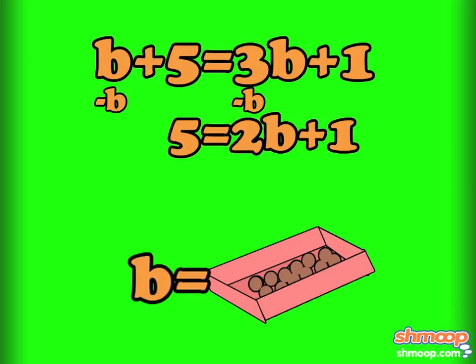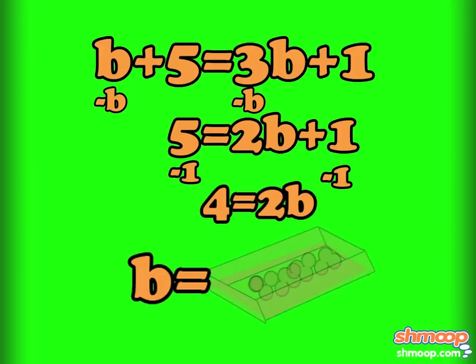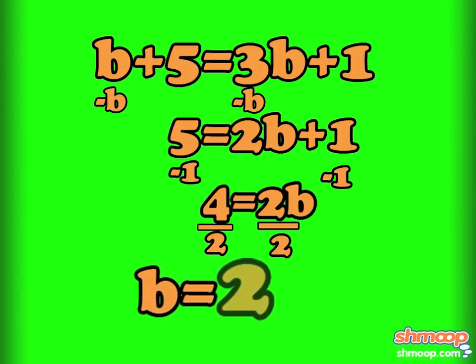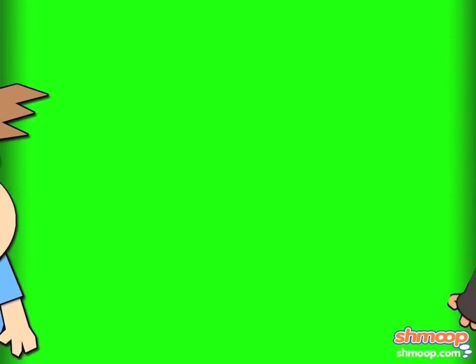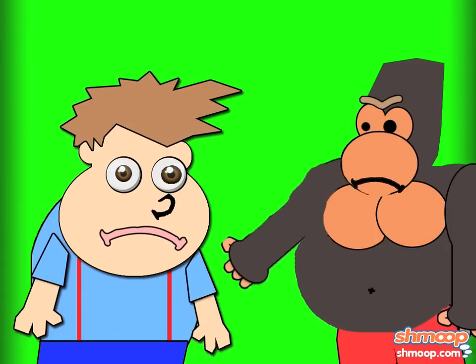Next, we can do the same thing with the remaining individual chocolates. Subtract one from each side and we get four equals two b. All we have to do at this point is divide both sides of the equation by two, and we can see that b equals two. In other words, there are only two chocolates in each box — kind of a letdown for the boys. Thank heavens for their secret stash.